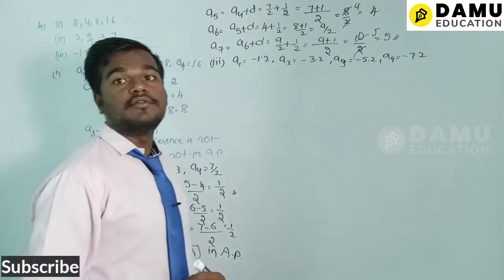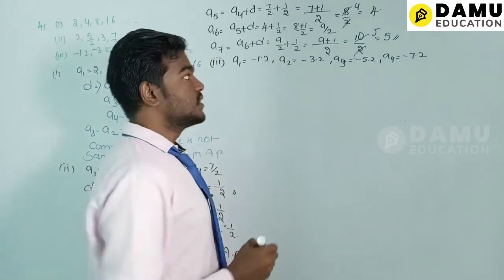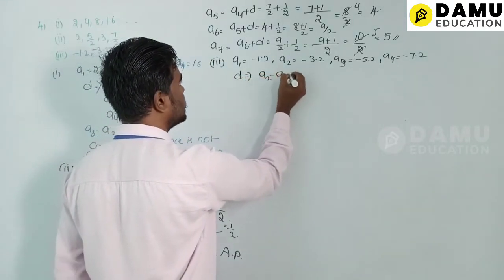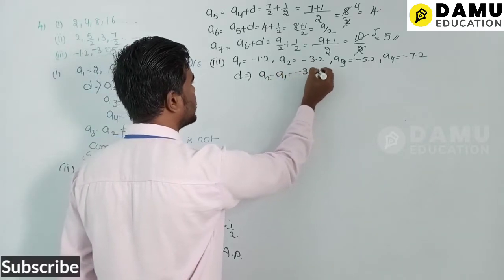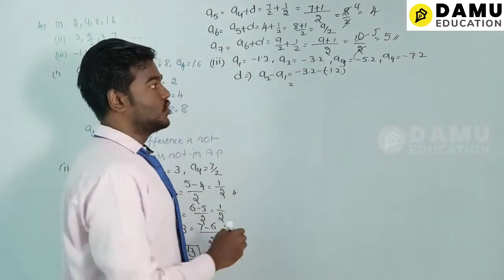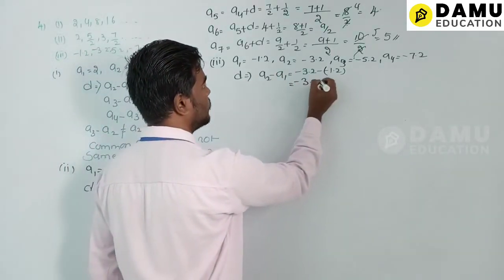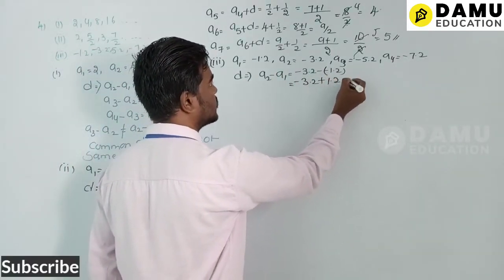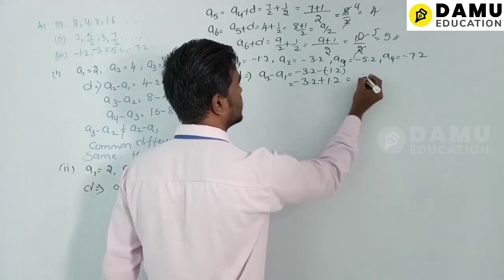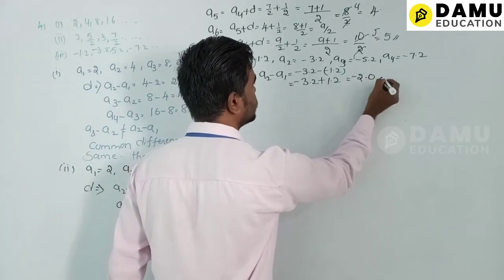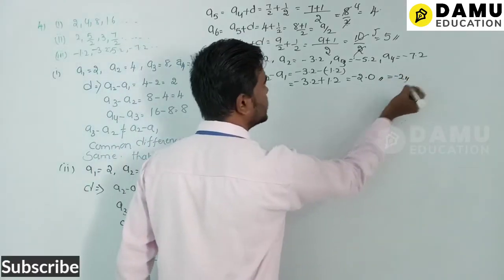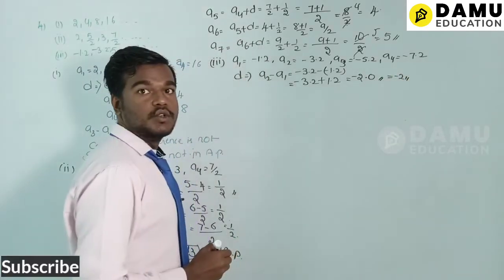The common difference d = a2 − a1 = −3.2 − (−1.2) = −3.2 + 1.2 = −2. So d = −2.